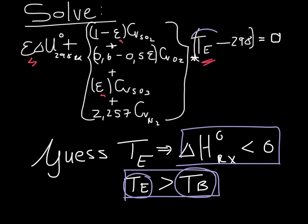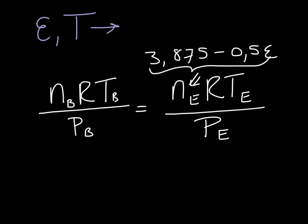Using our guess value for temperature we can now calculate a corresponding value for epsilon. In equation two we can substitute for our temperature and epsilon values that we got from our energy balance in order to solve pressure end in our system.